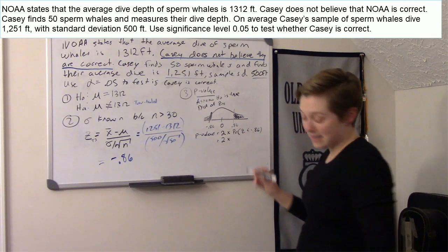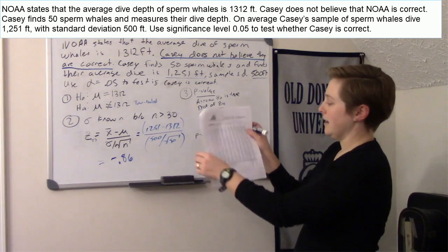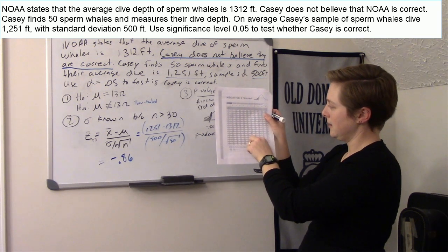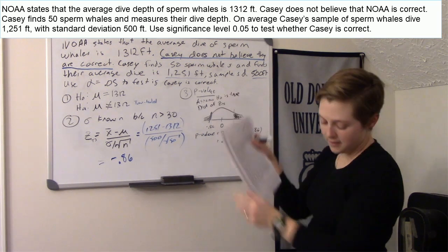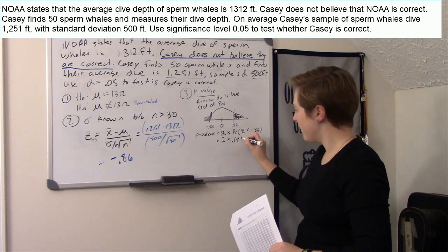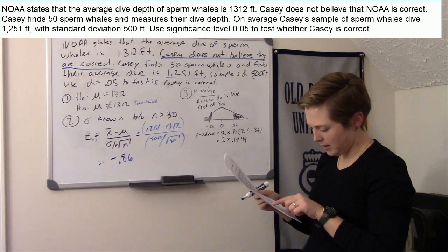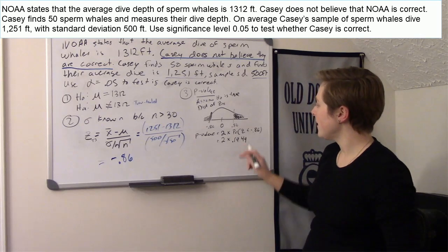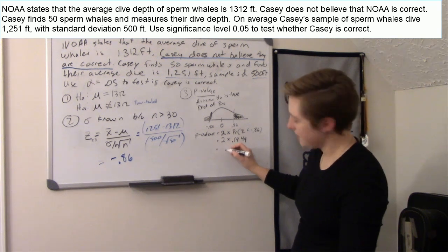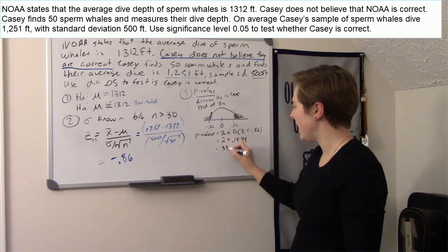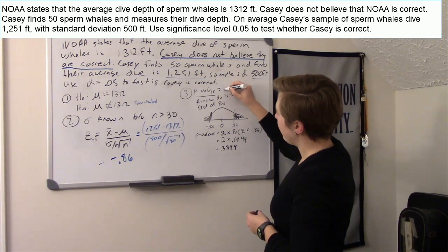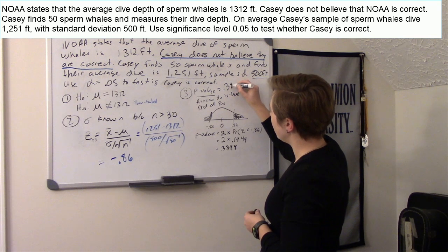Look up negative 0.86 in the z-table — go to the negative side, find 0.8 in the row and 6 in the column — you get 0.1949. Multiply by two and you get a p-value of 0.3898.